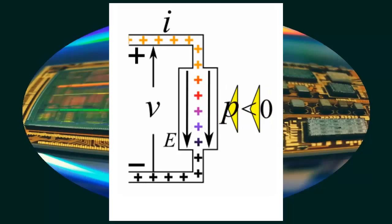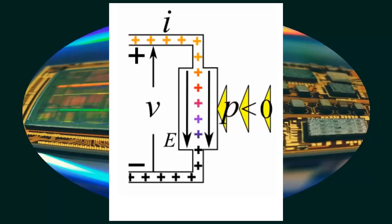Conversely, if an element is supplying power, current will flow from the negative terminal to the positive terminal. In this case, the element is absorbing negative power, which is a more complicated way of saying that it is supplying power.